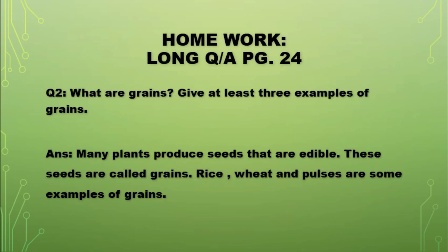Copy down question number 2 from your book page number 24: What are grains? Give 3 examples of grains. Answer: Many plants produce seeds that are edible. These seeds are called grains. Rice, seeds and pulses are some examples of grains. Copy this question and answer into your classwork copy.